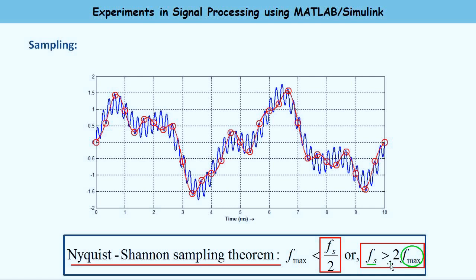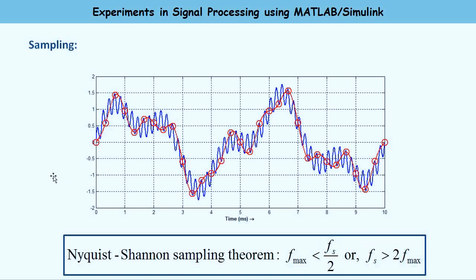This automatically implies that the signal you are going to sample has to be band-limited, because it has an upper limit f_max, meaning the Fourier transform of the signal will be zero outside a finite specified range. So if the signal is band-limited and your sampling process satisfies the sampling theorem, then you are able to sample it so that unambiguous reconstruction of the analog signal will be possible.